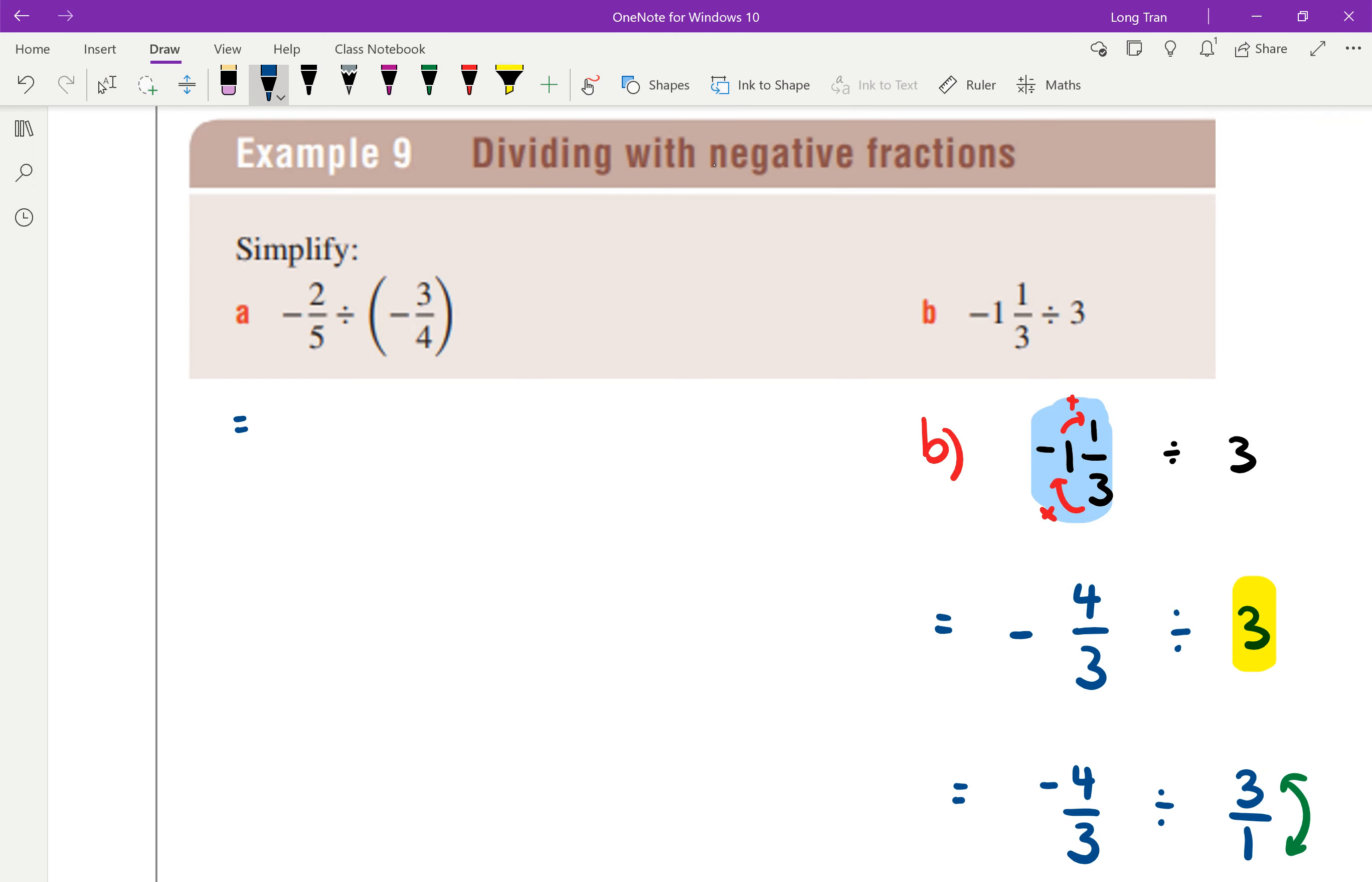Here we've got negative 2 over 5, and remember when you're dividing, the one that you're doing the reciprocal of is what, it's after the division sign, so it's the negative 3 over 4 is what I'm doing the reciprocal of.